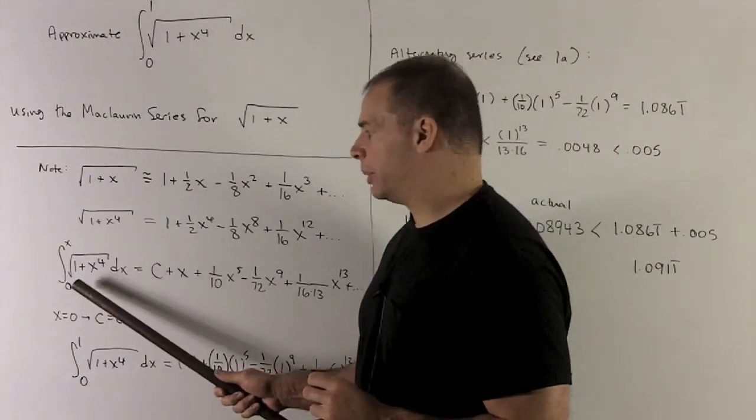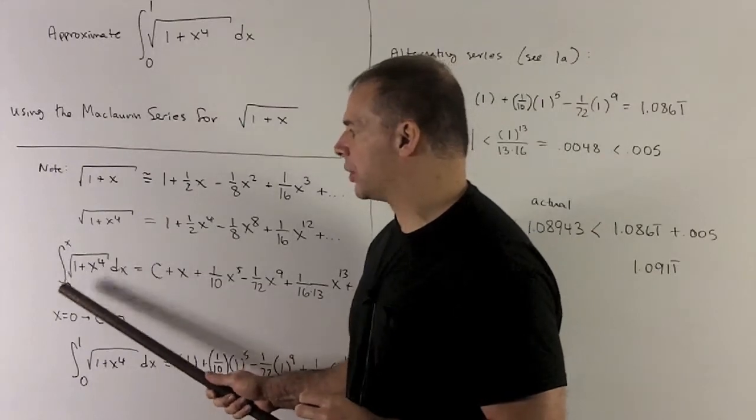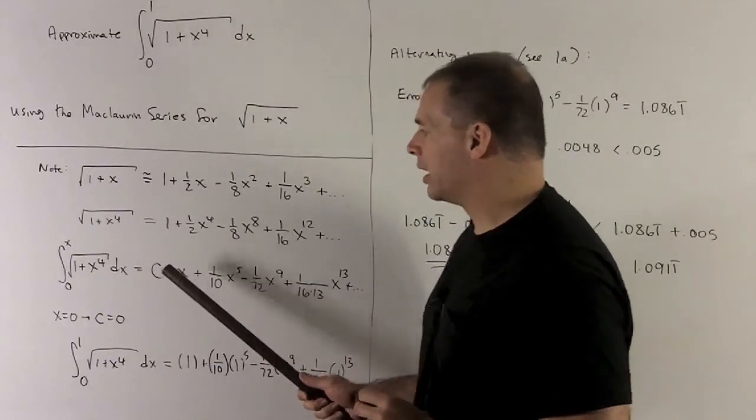Now, I'll take this to be anti-derivative going from, well, we make it definite going from 0 to x, and then I want to get rid of the constant of integration.